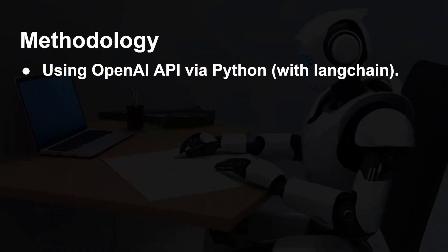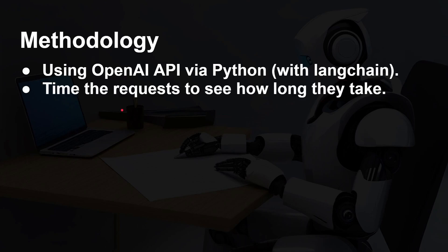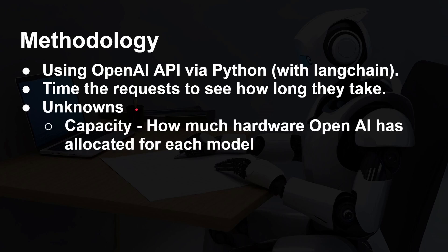So what's my methodology for testing? Basically, I'm using the OpenAI API via Python with LangChain. I send in a request to do a certain task and time how long it takes to get back the reply. Now, there are some unknowns — capacity: how much hardware has OpenAI allocated for each particular model? Are there more servers for one type of model than another? We don't know that.